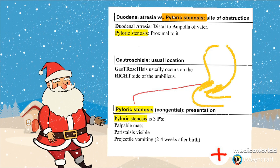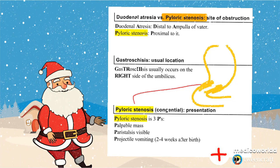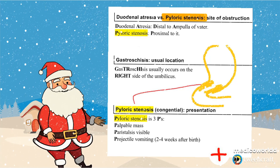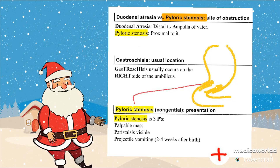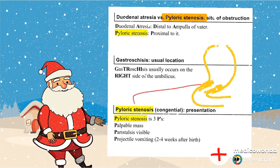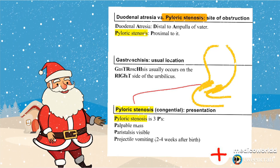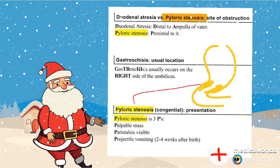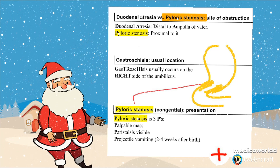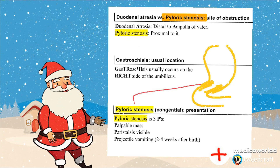Hello everyone, we are discussing here some points regarding the stomach. The condition regarding the stomach is pyloric stenosis. Pyloric stenosis is present proximal to the ampulla of Vater. You can remember it as P for P, which means proximal to the ampulla of Vater.